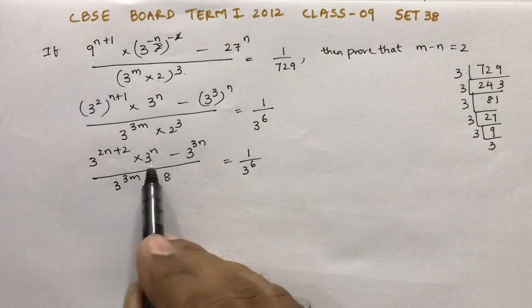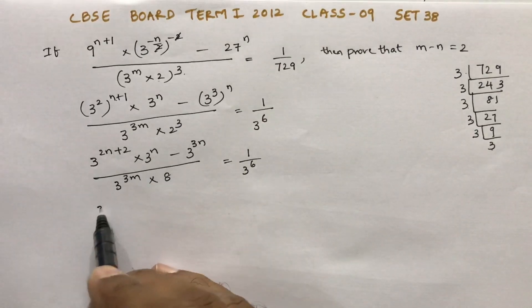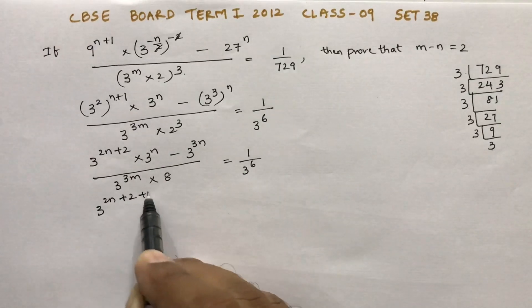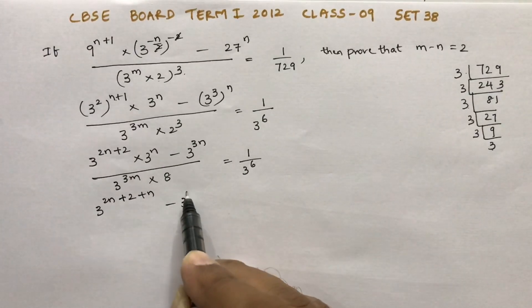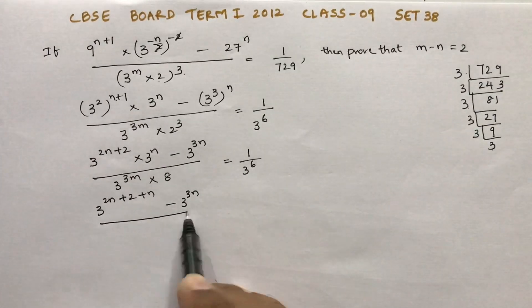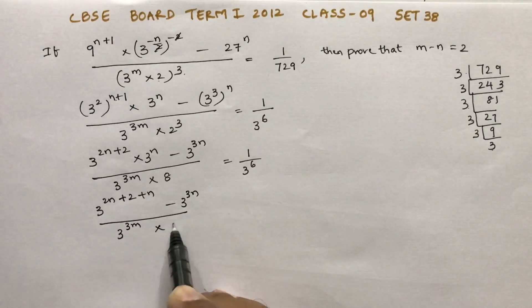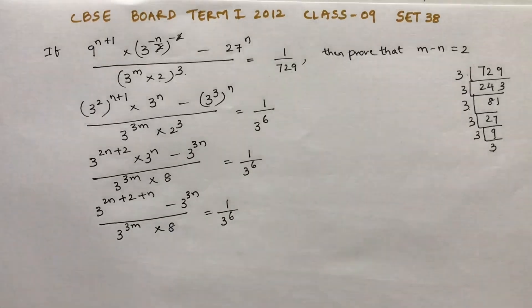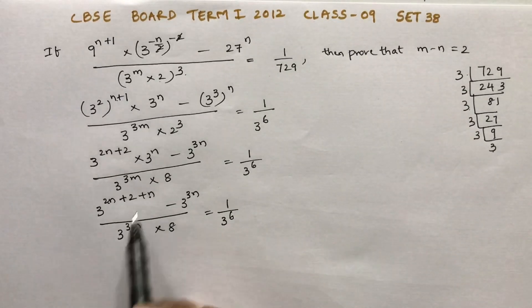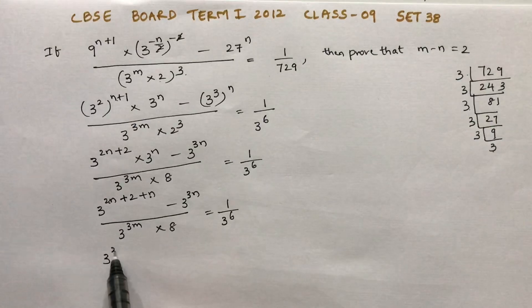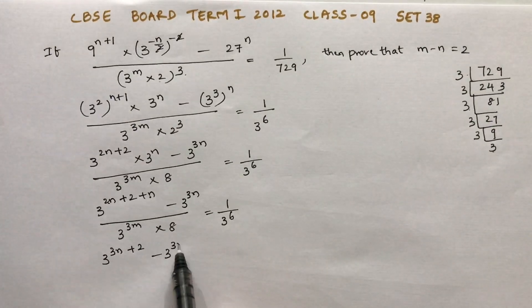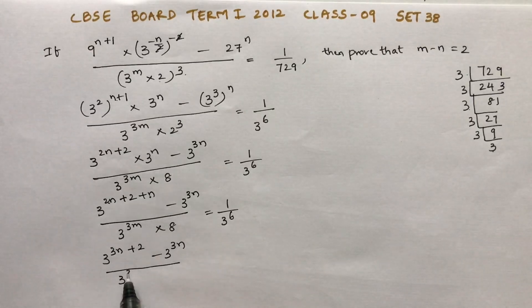Here these two terms have the same base, so we can add the exponents. So 3 power 2n plus 2 plus n, minus 3 power 3n, by 3 power 3m into 8.